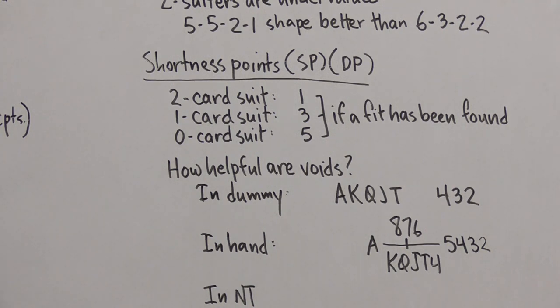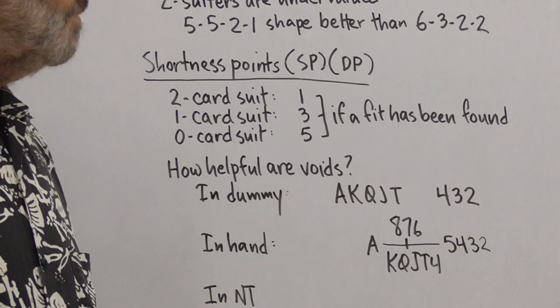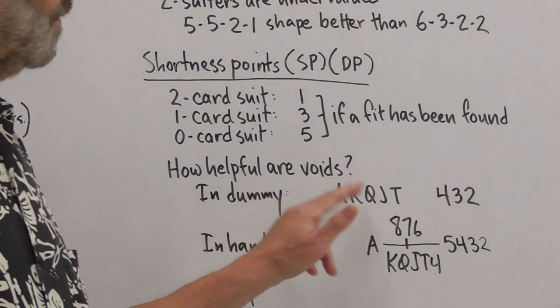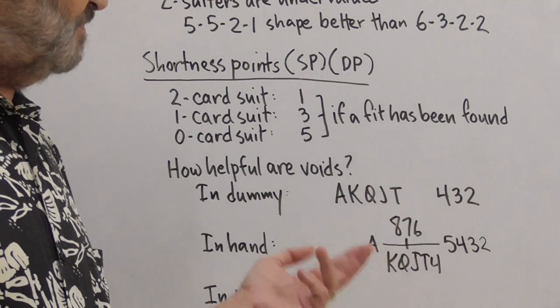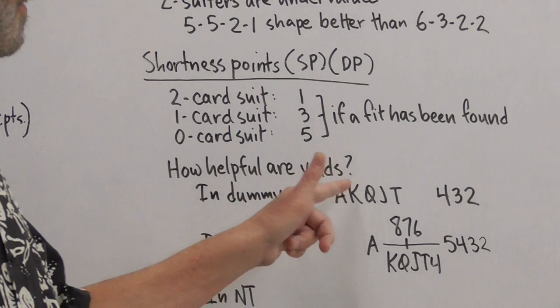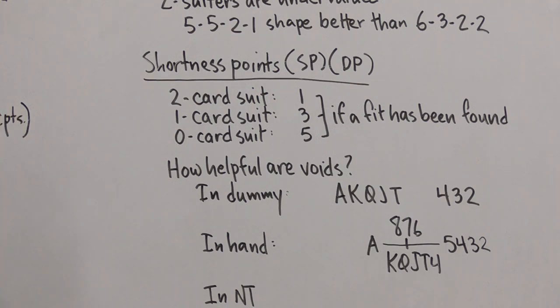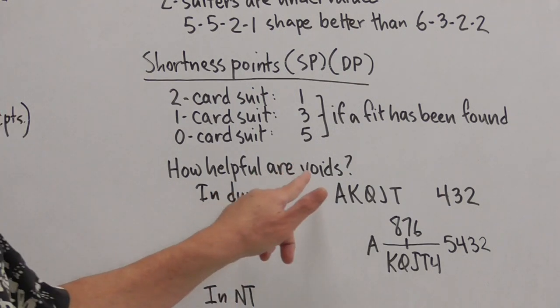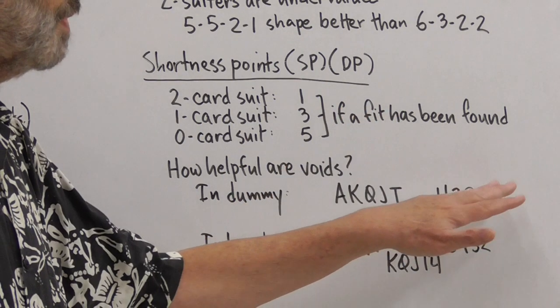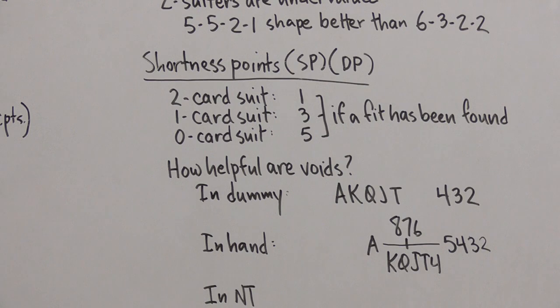So let's ask ourselves for a moment, how helpful are voids? Well, we talked about voids in dummy. This is the suit I was thinking of when I was discussing that. This suit will produce five tricks. Ace, king, queen, jack, ten. And I'll follow three times under the ace, king, queen, and then take the jack, ten. If I can trump with one of these cards, I'll get a sixth trick in that suit. If I have to trump with one of these cards, that doesn't increase my trick count. I won't get a sixth trick if I have to trump with one of these, only if I can trump with one of these. So short suits in dummy are very valuable. They produce tricks.